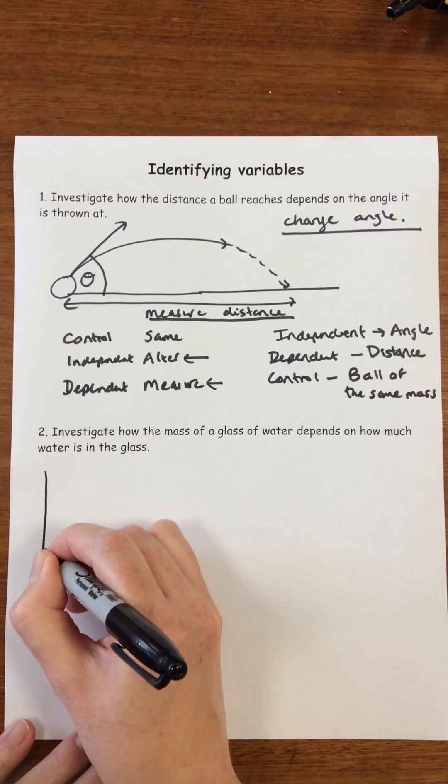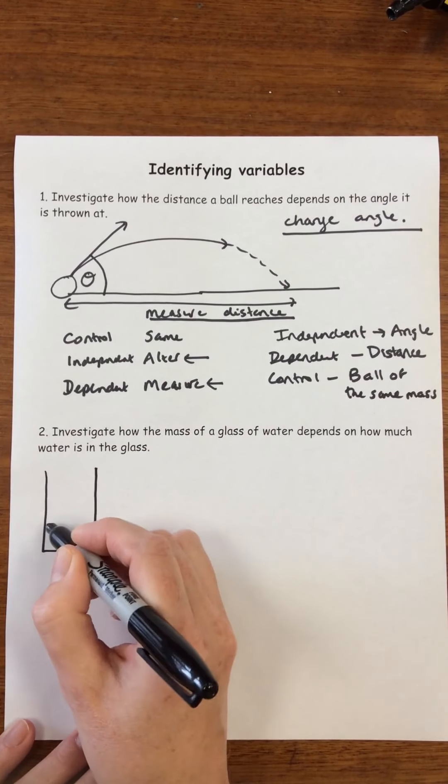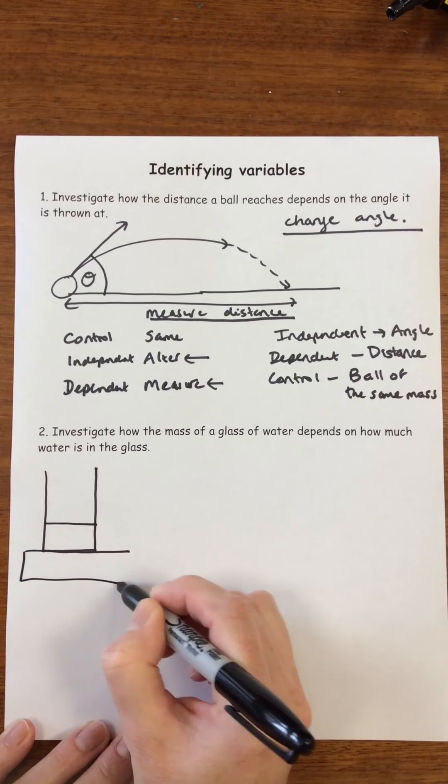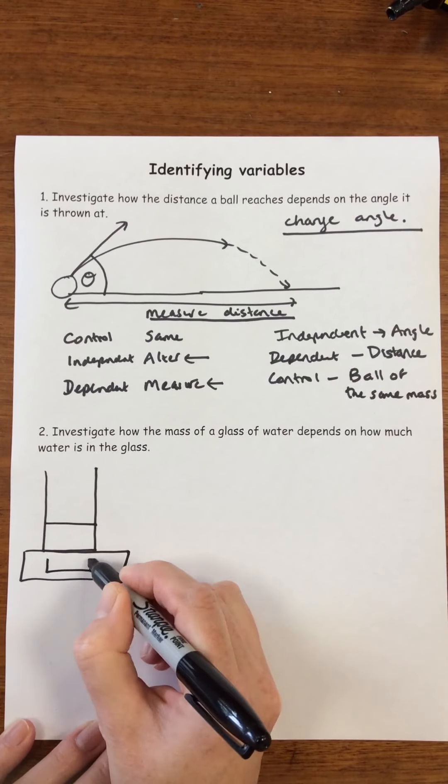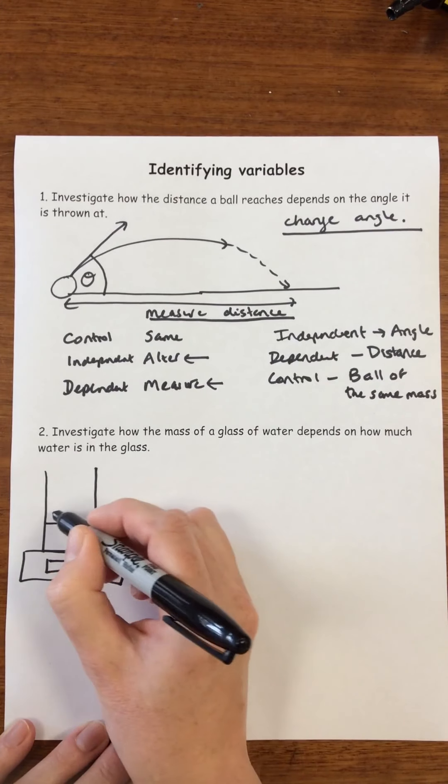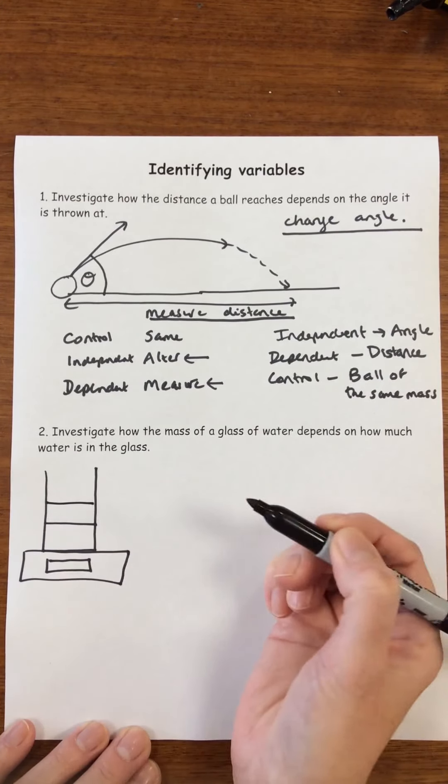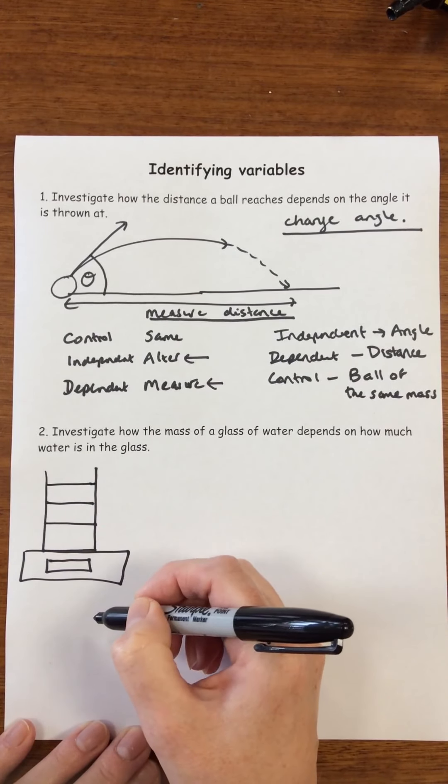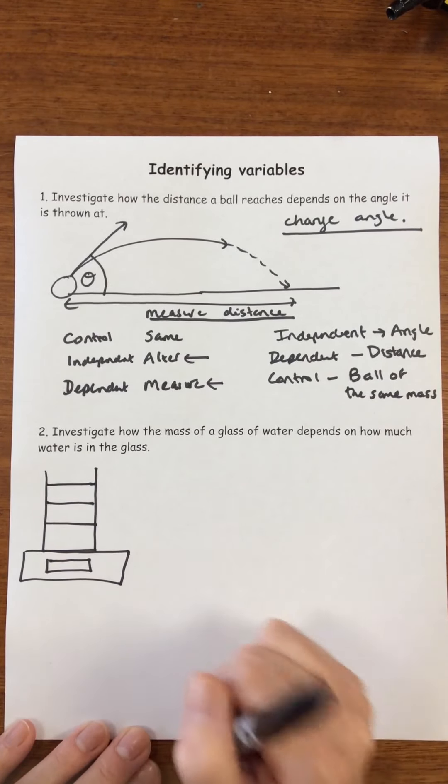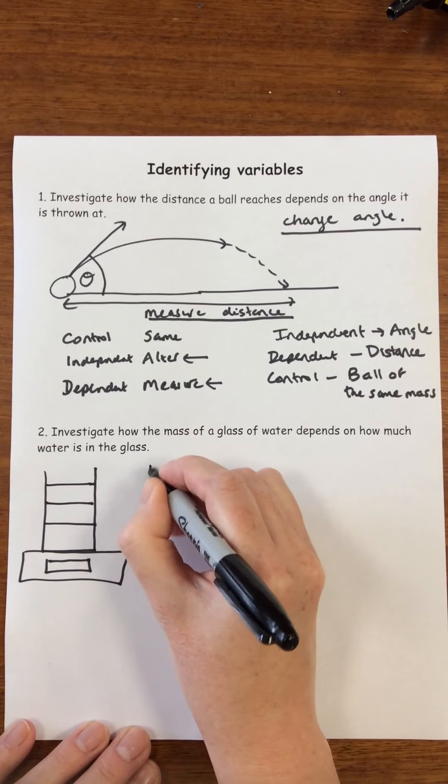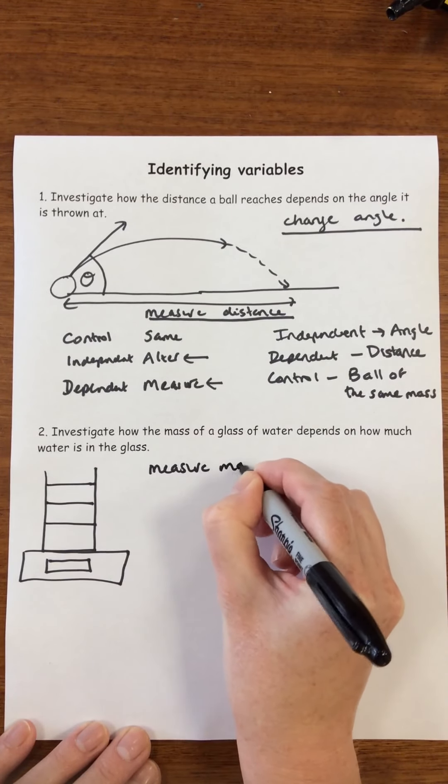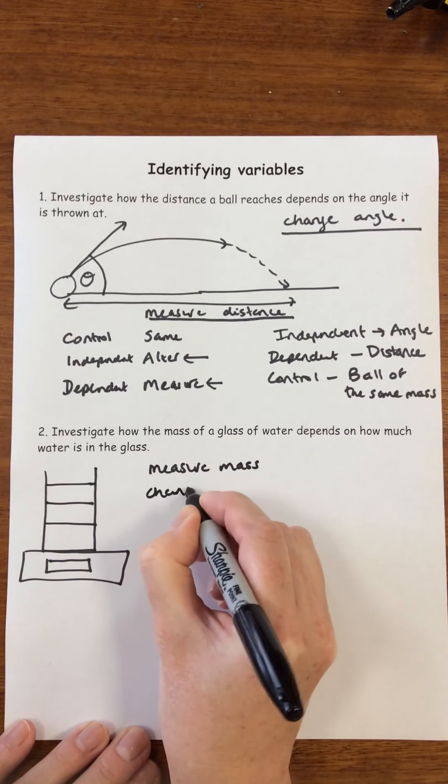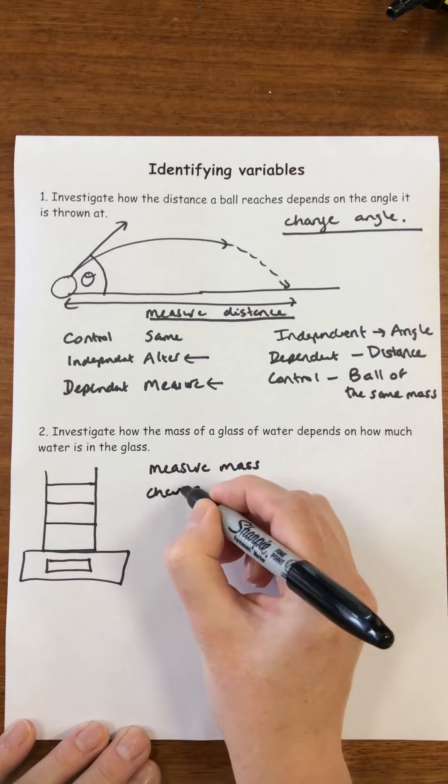So we're going to take a glass, fill it with water, and then on an electronic balance we'll measure the mass. Then we're going to add some more water and measure the mass, some more water and measure the mass. So already we have realized that we are going to measure the mass and we're going to change how much water is in the glass.